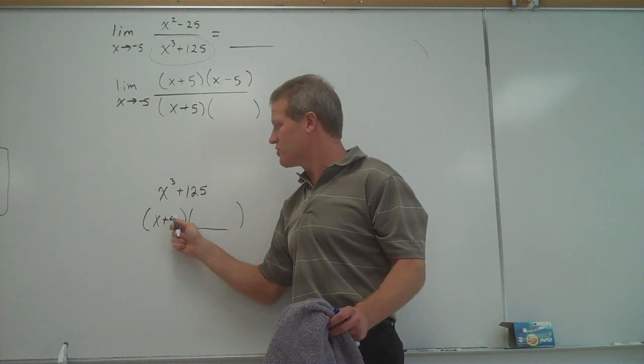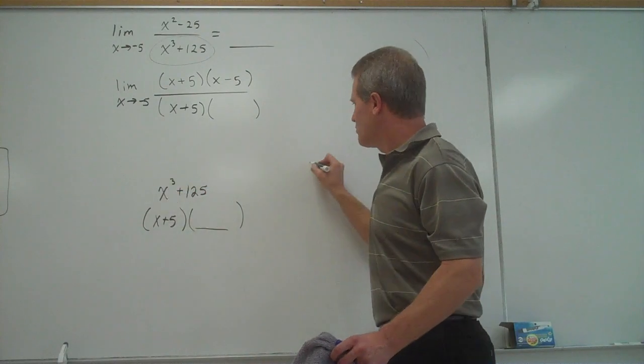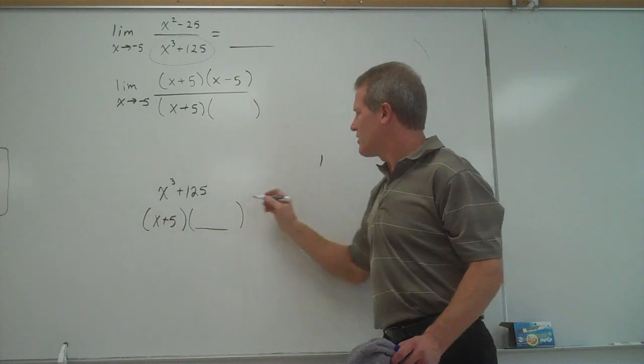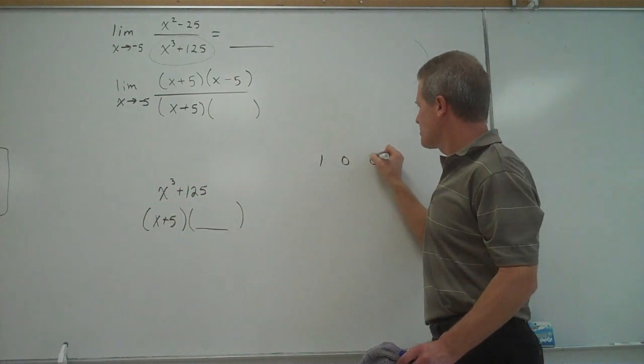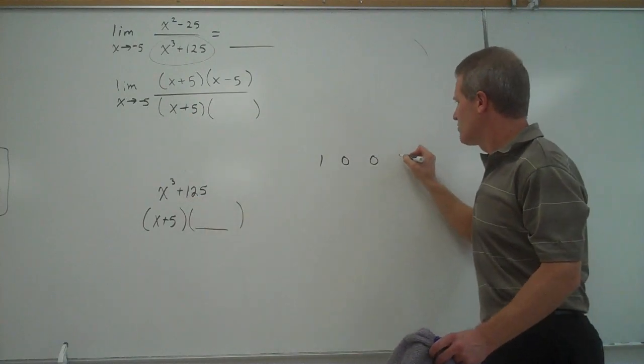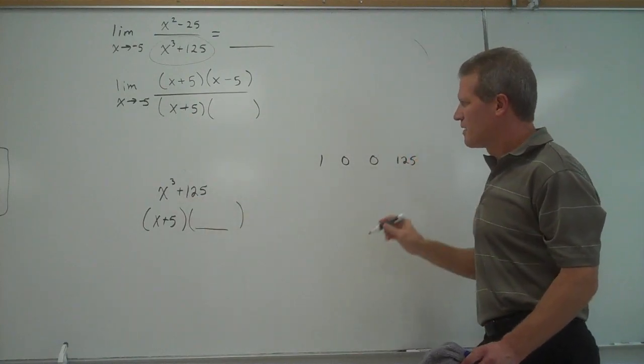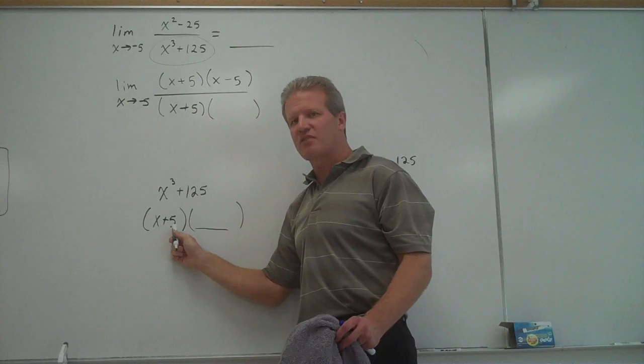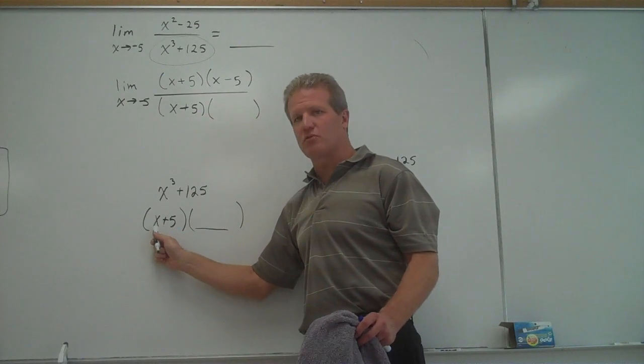This is 1x cubed. There's 0x squareds. There's 0x to the 1st plus the constant of 125. If I'm trying to divide by x plus 5, I use the value that makes this 0, which is negative 5.